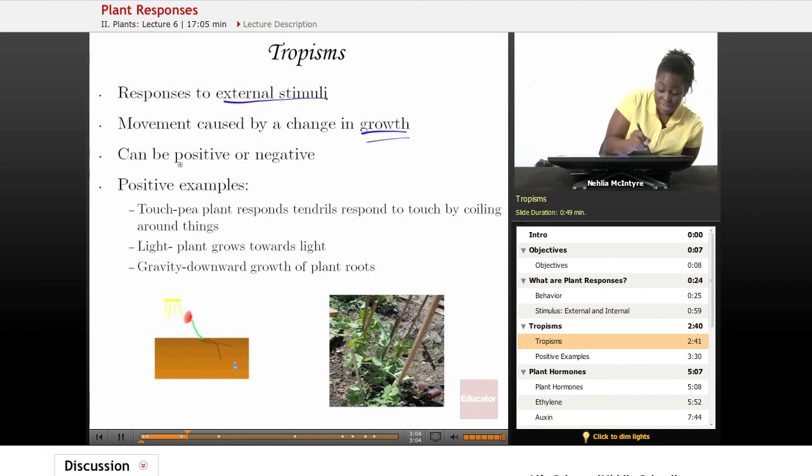Tropisms can be positive or negative. Positive tropisms would cause the plant to grow, and negative tropisms would cause the plant to not grow.